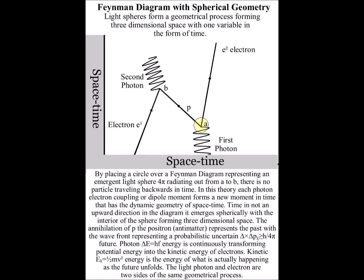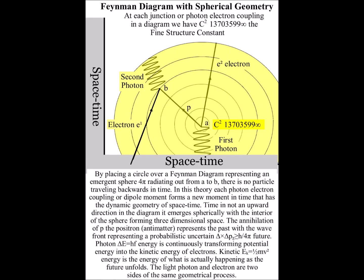By placing a circle over a Feynman diagram representing an emergent light sphere radiating out from A to B, there is no antiparticle travelling backwards in time. In this theory, we have light spheres continuously forming with each photon-electron coupling.